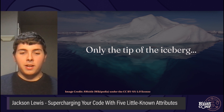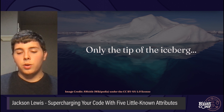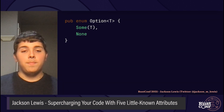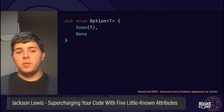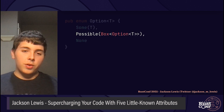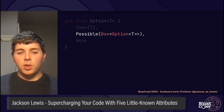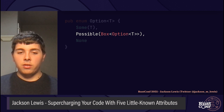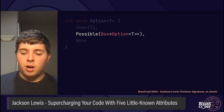To keep this talk interesting, I'll be explaining these attributes through a hypothetical story. What we have right here is the Option enum, one of the most foundational types in Rust. One day, a controversial feature request proposed adding a third variant to the Option enum called Possible. While the maintainers insist that it's rather redundant, the creator of this feature request says that it will revolutionize the language. But there's a problem.